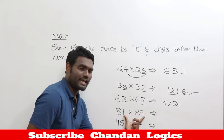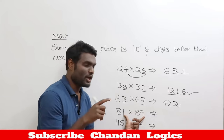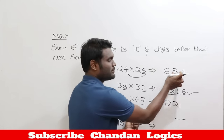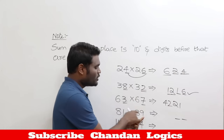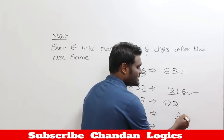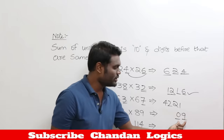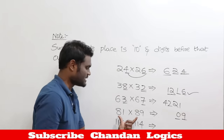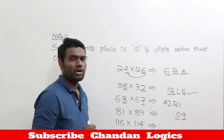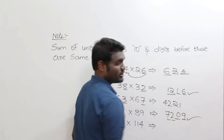Now the last 2 digits are 1 and 9. 1×9 = 9, but you must write it as 09 because you always write the last 2 digits of your answer, and 9 is a single digit number, so write it as 09. Next, both leading digits are 8, so multiply 8 by its next number: 8's next number is 9. 8×9 = 72. So the answer is 7209.